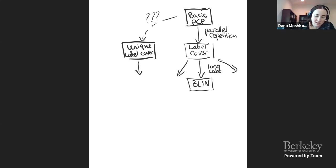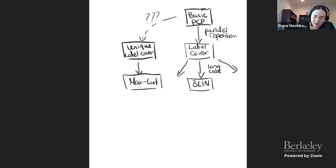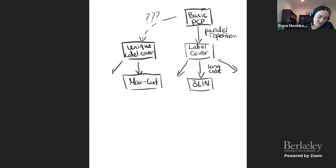Eventually MaxCut was proved — that's the KKMO result, which I'll do today. There's also vertex cover and many other theorems that you couldn't prove with the standard paradigm but can prove once you assume the permutations are one-to-one (unique). These include papers by Regev, Subhash, and others.